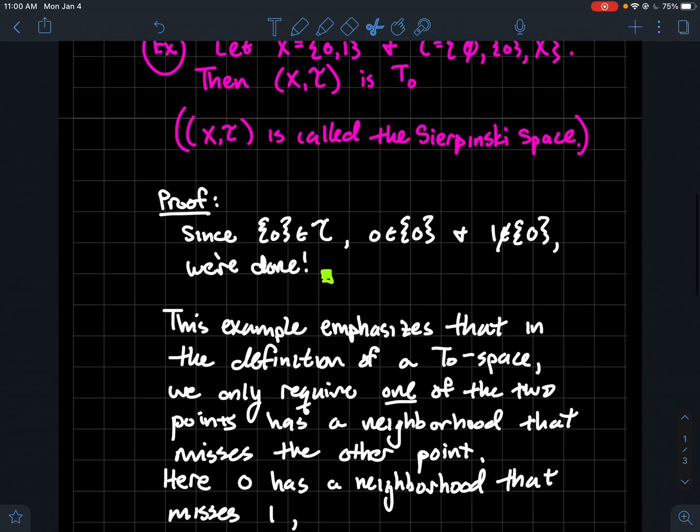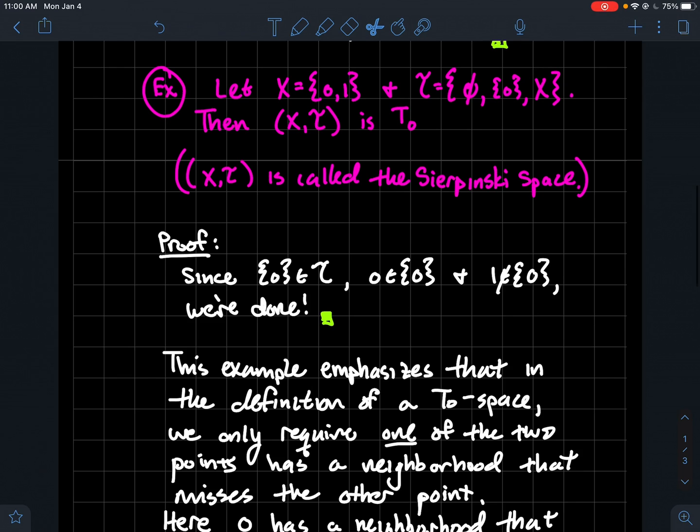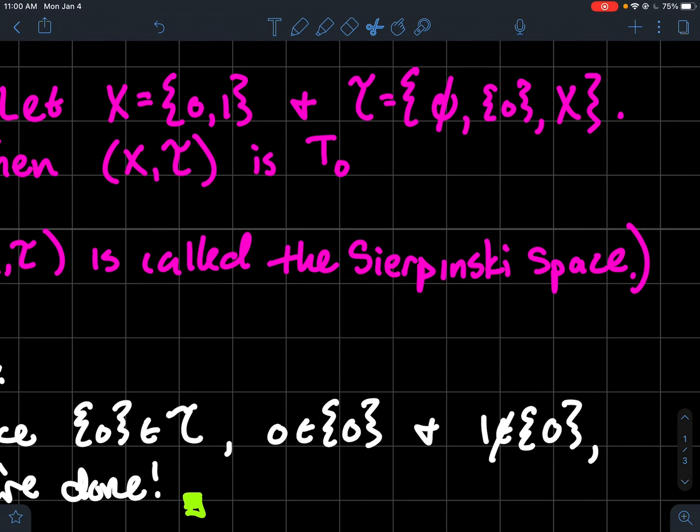And so let's take a look at this example with the Sierpinski space here. So here, 0 is the one that had a neighborhood that misses 1. On the other hand, though, if you take a look at the topology up here, the only neighborhood of 1 in τ is the whole set X itself.